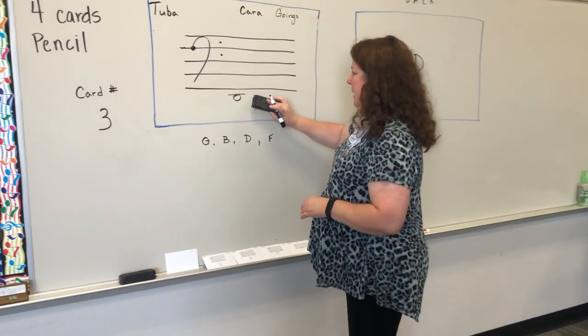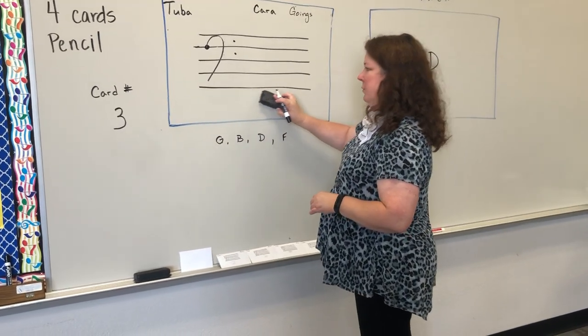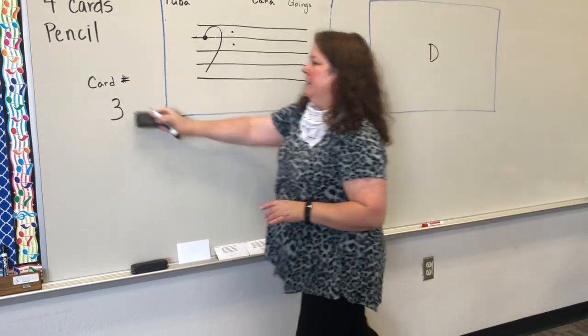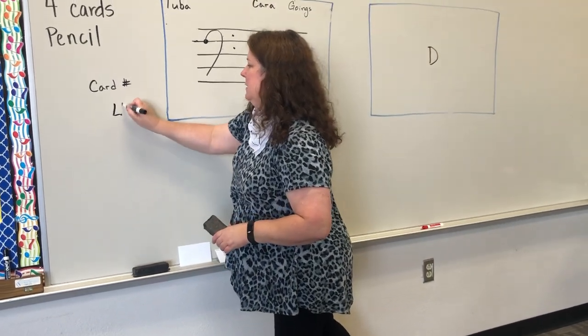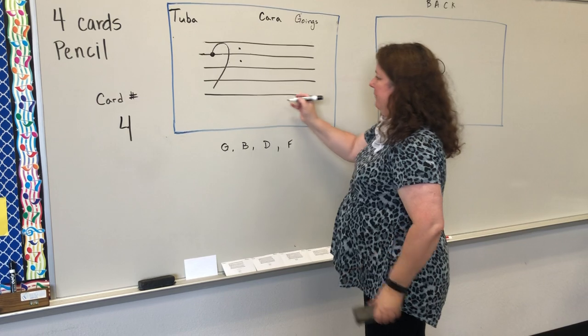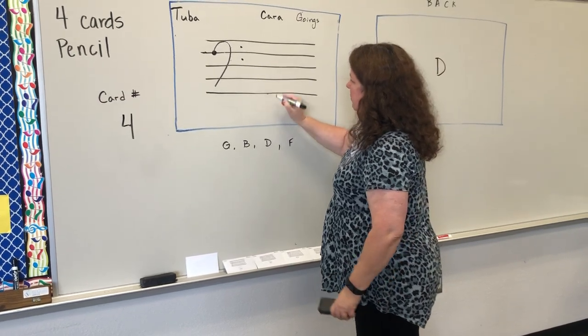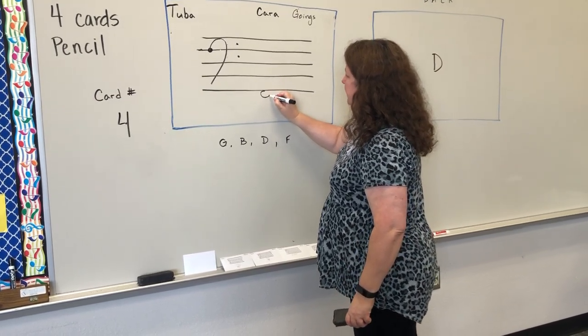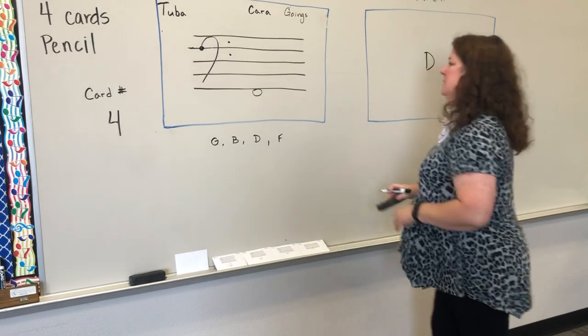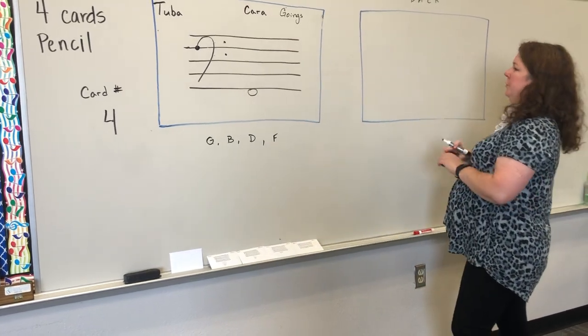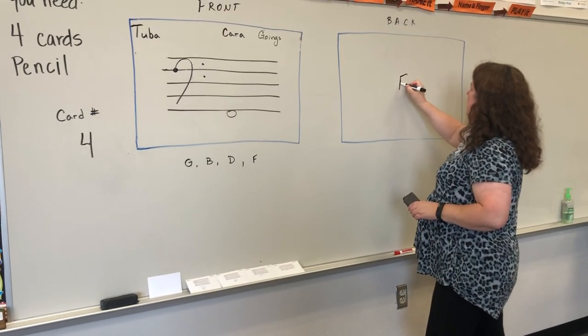And last but not least, we don't need to draw an extra line for this because it's within the scope of the staff. So, this is going to hang below line number one. And this is a very important note for tuba world. This is the note F.